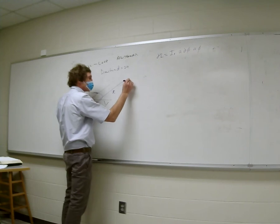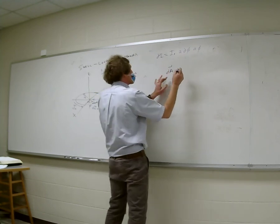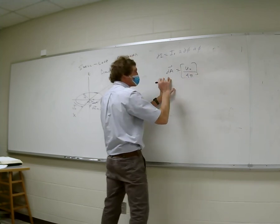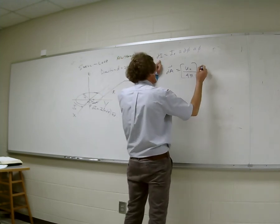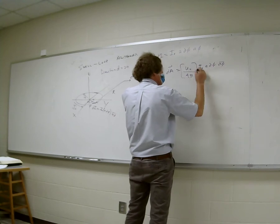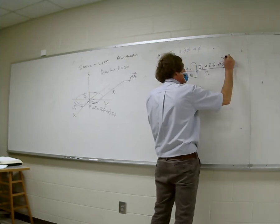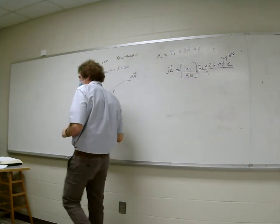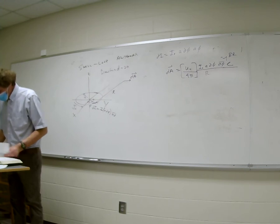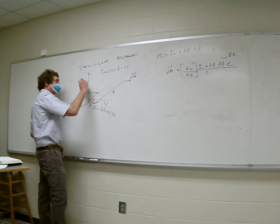He says dA equals μ₀ over 4π times the current element DI — that's I₀ · A · dφ in the A_phi direction — divided by R, times e^{-jβR}. He uses capital R for radial distance. That's equation 8.58 in his book. Then he considers the angle β measured from the axis to the observation point.